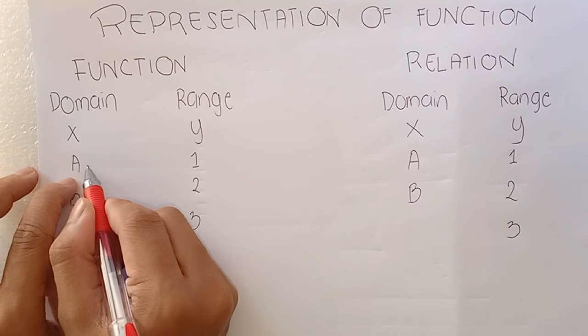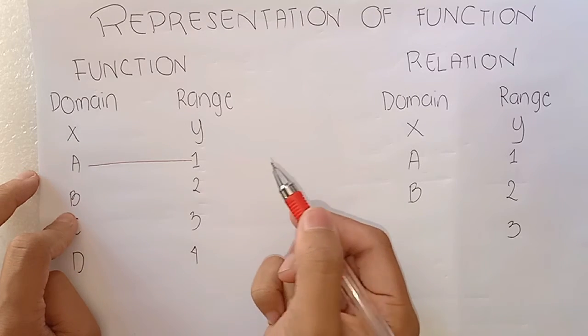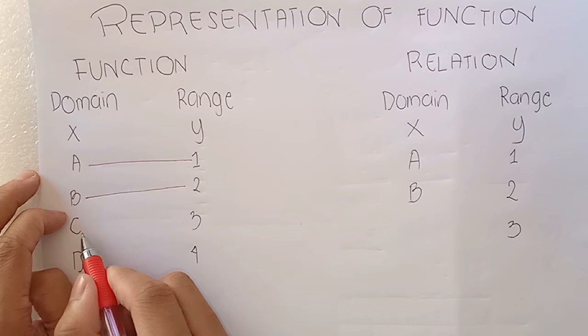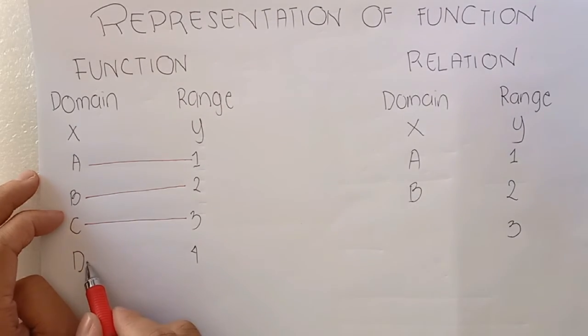A, which is one value of x, will be paired with one value of y. B is paired with 2, C is paired with 3, and lastly, D is paired with 4.